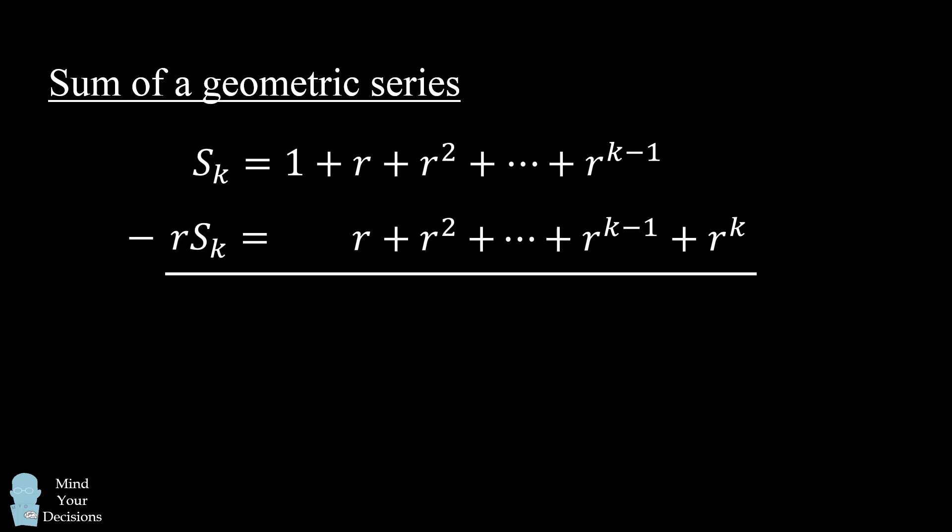We now subtract the second equation from the first. This will cancel out many terms. In particular, we cancel out the r's, we cancel out the r squares, we cancel out all of these middle terms, and we cancel out r to the power of k minus 1.